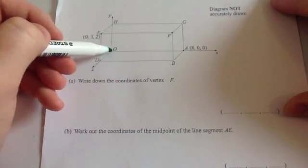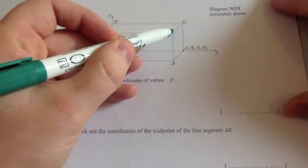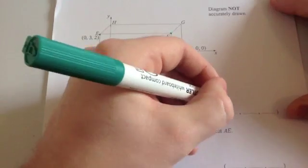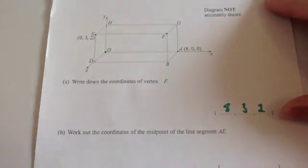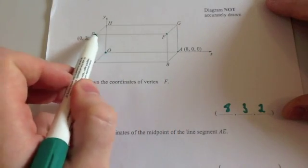So this one here would be going 8 across, 3 up and 2 out. So the coordinate would be 8, 3, 2. Let's just check that again. It's going to go 8 across. The height of this one was 3, so it's going to go 3 up.